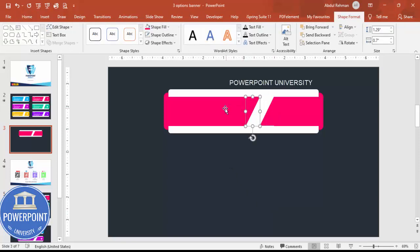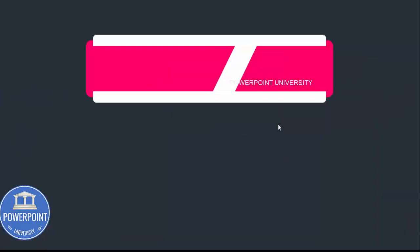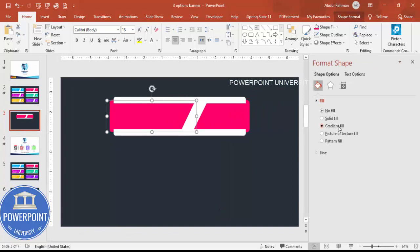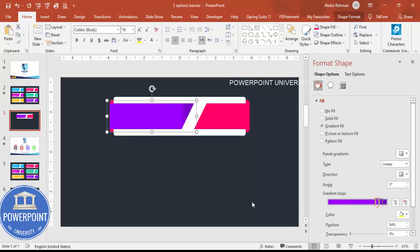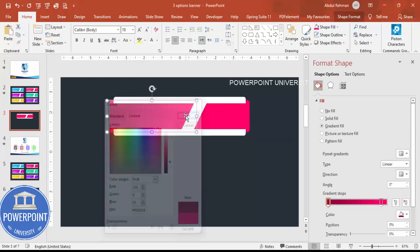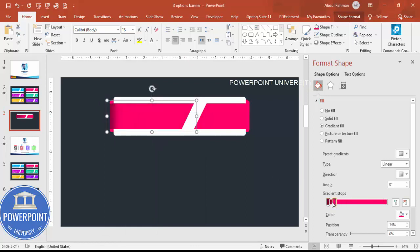Once done, select both triangle shapes and press Ctrl+G to group them, then select that group along with the rectangle and press Ctrl+G again. Now to add a gradient fill, right-click and go to Format Shape. Select gradient fill with two stops: the first stop is your pink color, and the second stop is also pink but darker at the corners. Adjust the stop positions to achieve a nice shadowed effect. Do the same for the other shape.